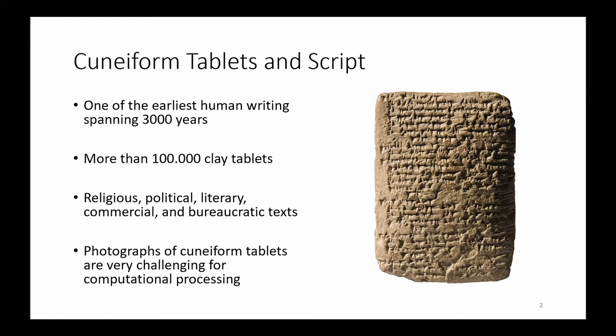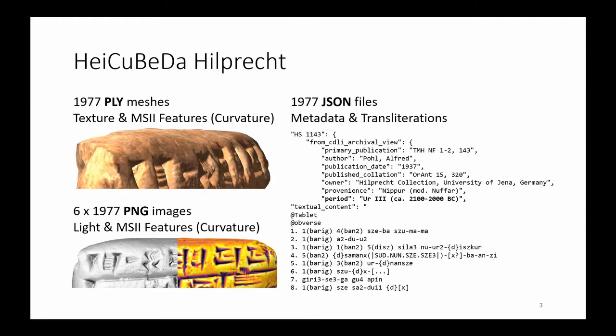This is why cuneiform tablets are preferably acquired in 3D, to record a digital representation that is decipherable. In previous work we published a comprehensive digital dataset of cuneiform tablets, first of its kind in breadth and depth, called HiQbeta. It consists of 1977 cuneiform tablets as 3D meshes, with metadata from the cuneiform digital library initiative.